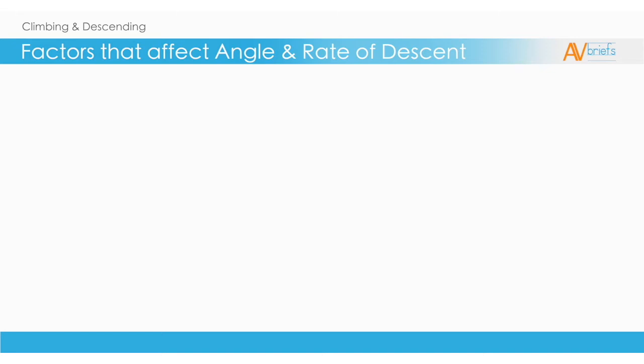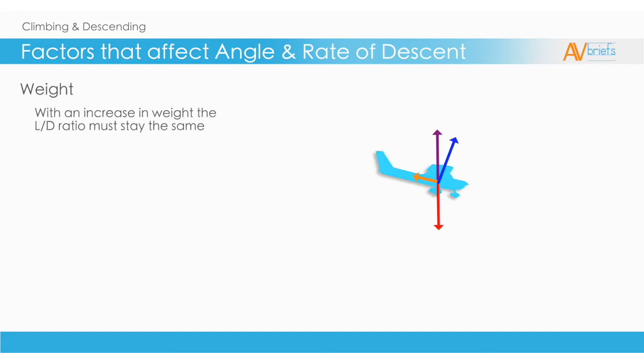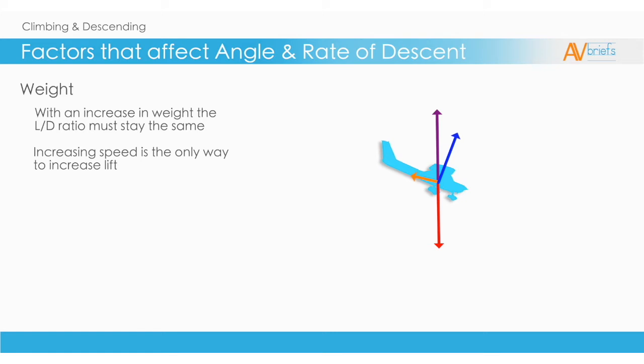We'll look at factors which affect angle and rate of descent. These are very similar to the factors that affect the climb. Weight: with an increase in weight, the lift-to-drag ratio must stay the same. Increasing speed is the only way to increase lift. The added lift compensates for the increased weight.